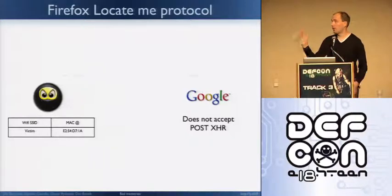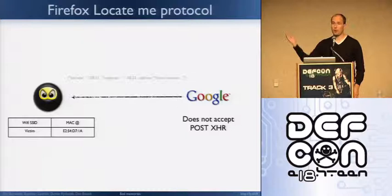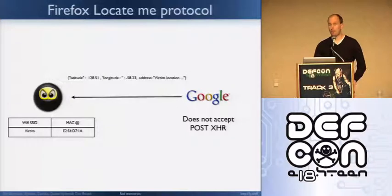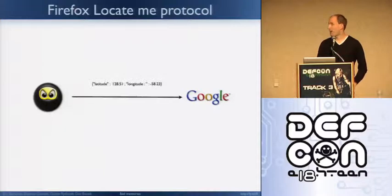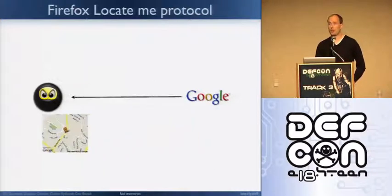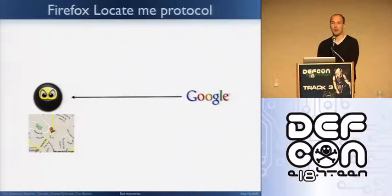So you do all these extra requests, you get longitude and latitude, and of course, if you're using Google, what about just asking for a map? The attacker gets a nice map of where the network is. So you have the WPA key, you have the network position, then you're all set.